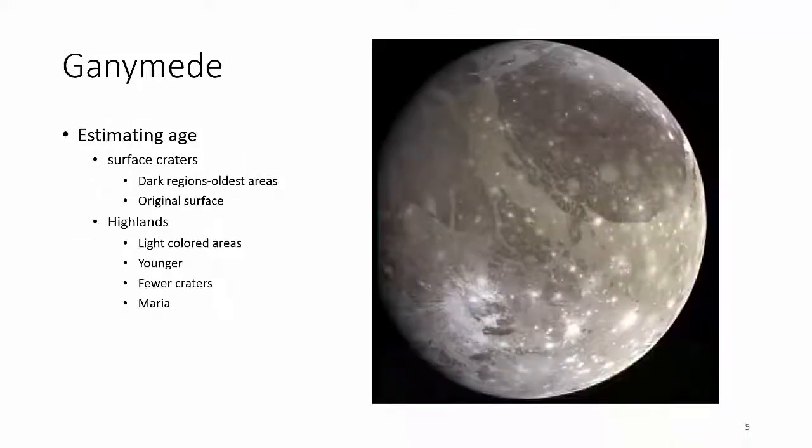We think the dark regions might be the older regions — the original surface — and the highlands are the light-colored regions, just like on the moon, and they're younger. The reason we think they're younger is because there are fewer craters. Fewer craters generally means a younger surface.